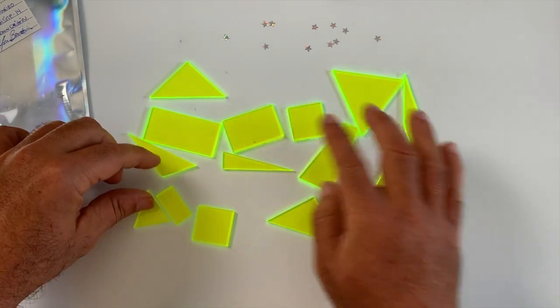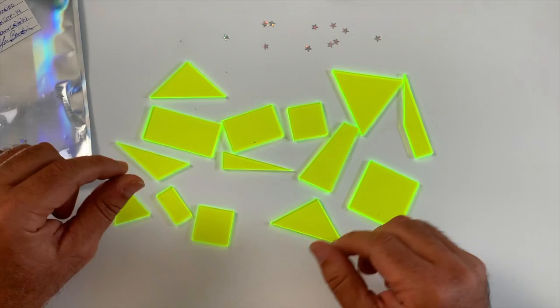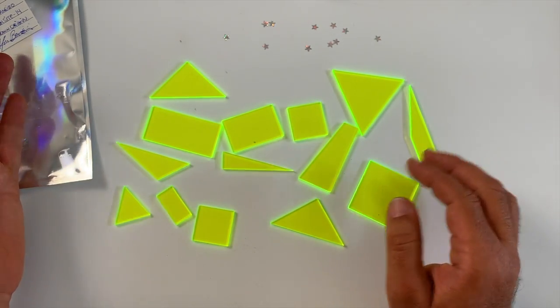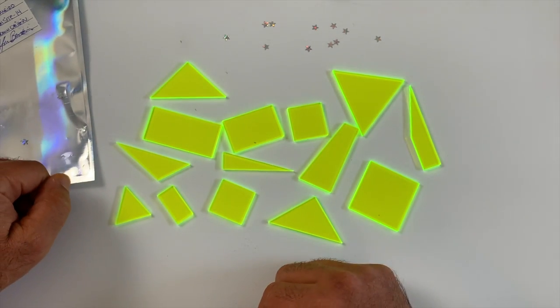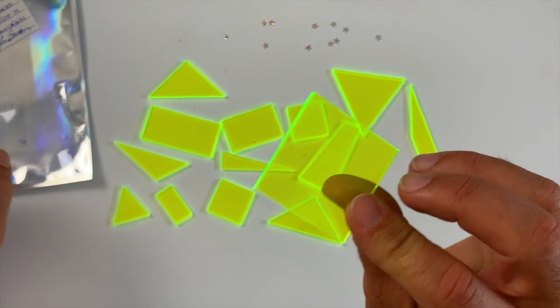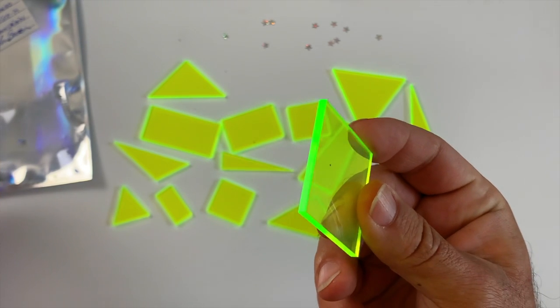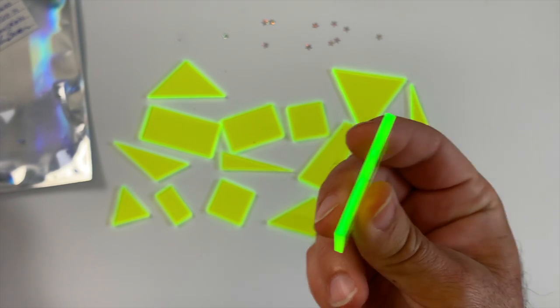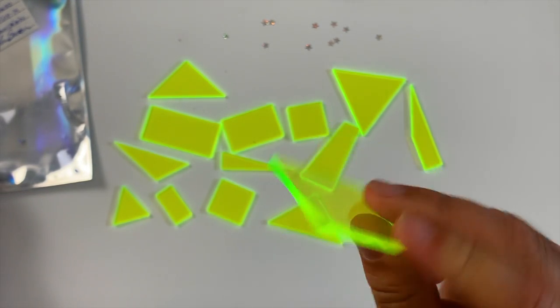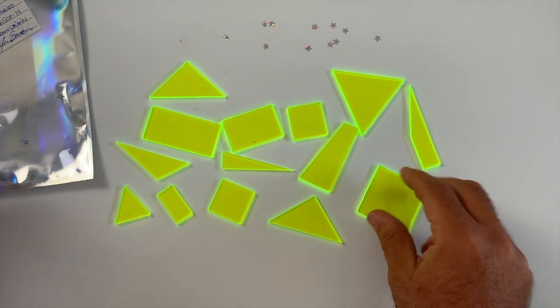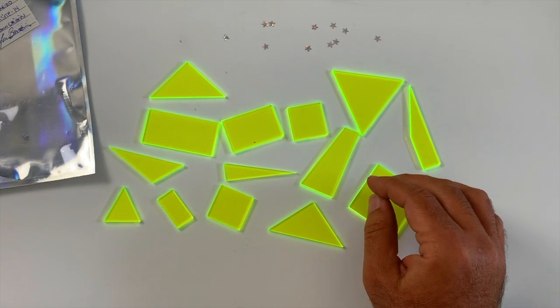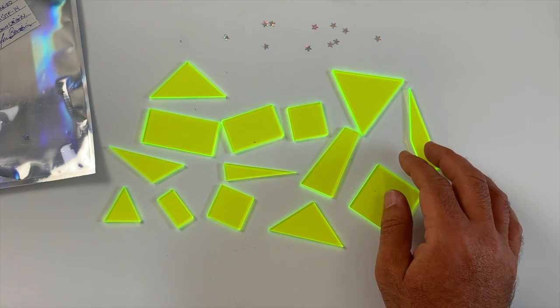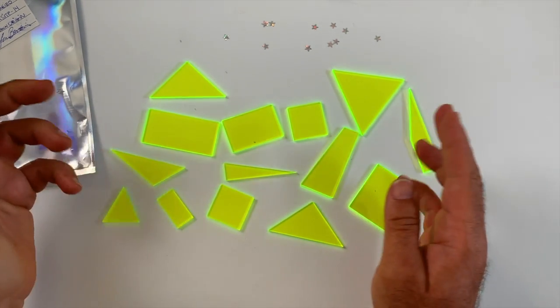It's a geometrical shape puzzle and you're going to be putting it together. I love these pieces, they're very interesting. Look at that, they glow. These pieces glow, right? Acrylic pieces. Let's go ahead and solve this for you now.